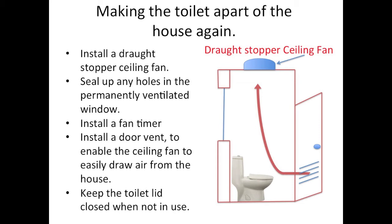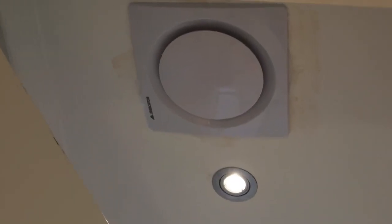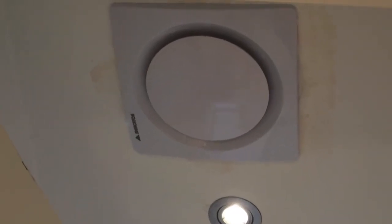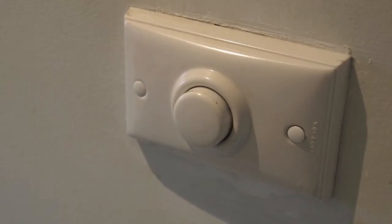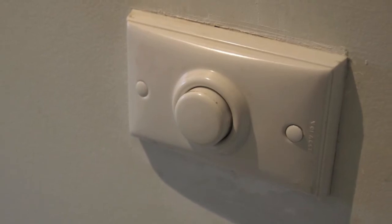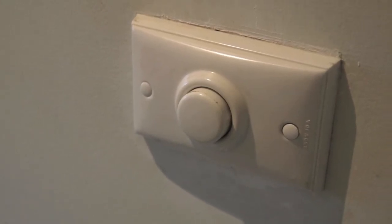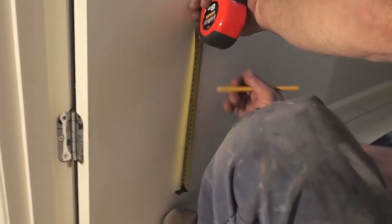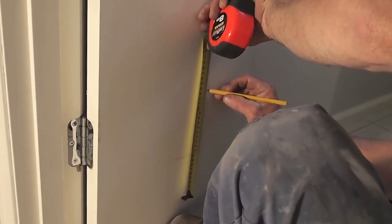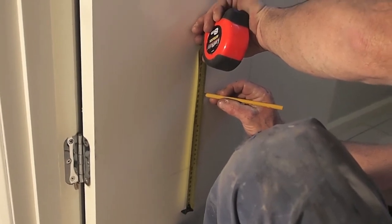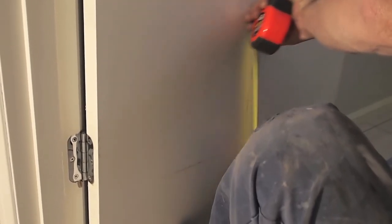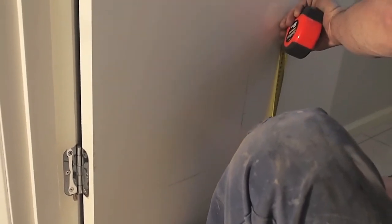Some of the key parts to enabling a more comfortable and efficient toilet is to take the following actions: remove outside ventilation in the window, install a draught stopper fan, install a timer on your fan, install a door vent, and keep the toilet lid down when not in use to reduce humidity.